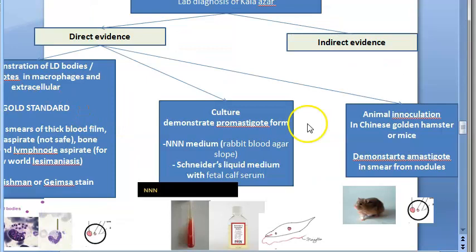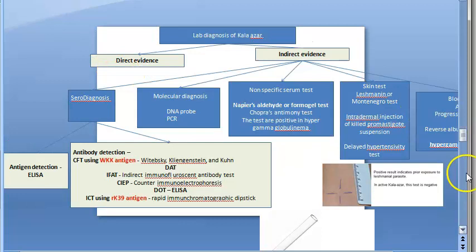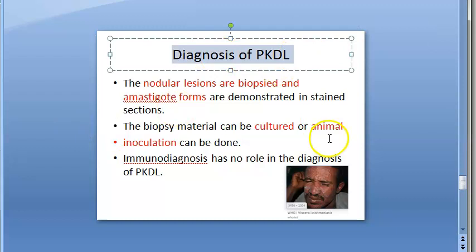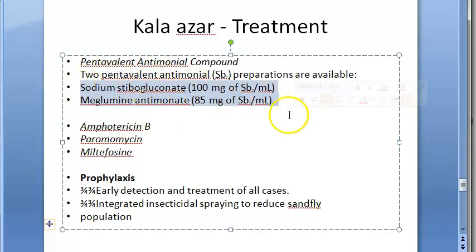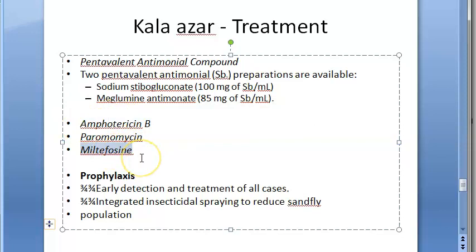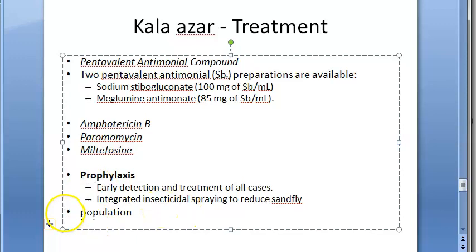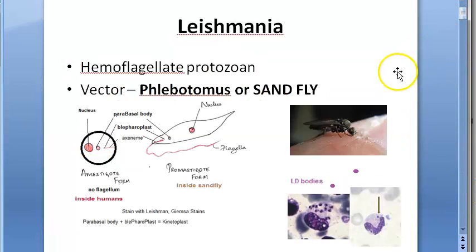Lab diagnosis is extensive — with direct and indirect evidence — and will be covered in the next video, along with diagnosis of post-kala-azar dermal lesions and treatment of kala-azar. Treatment options include pentavalent antimonial compounds, amphotericin B, paromomycin, and miltefosine. Prophylaxis involves prevention through hygiene and vector control. We are done with the current content — come back for the next video on lab diagnosis of kala-azar.